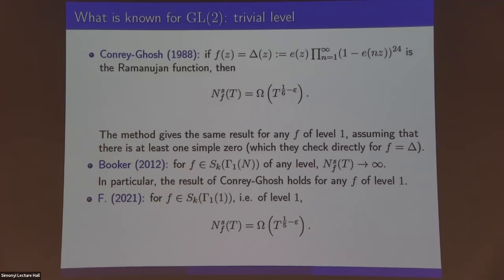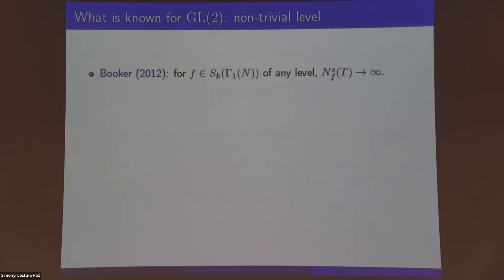And so the question becomes, what if the level is non-trivial? Can we also mimic these sorts of quantitative results? Here is Booker's result again from the previous slide. It shows that there are infinitely many simple zeros regardless of the level. It turns out that if you try to make this result quantitative, you run into some roadblocks. The roadblocks with the level were similar to, or it's possible to make an analogy with the difficulties in extending the Hecke converse theorem, if you know what that is, to a general level. That was done by Weil, and the difficulties are slightly reminiscent here in extending this result.